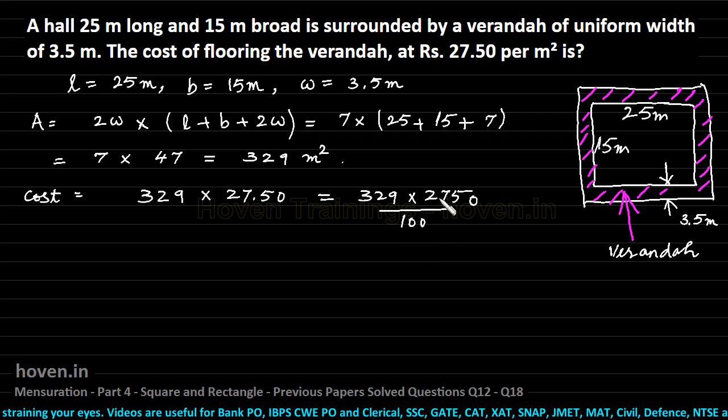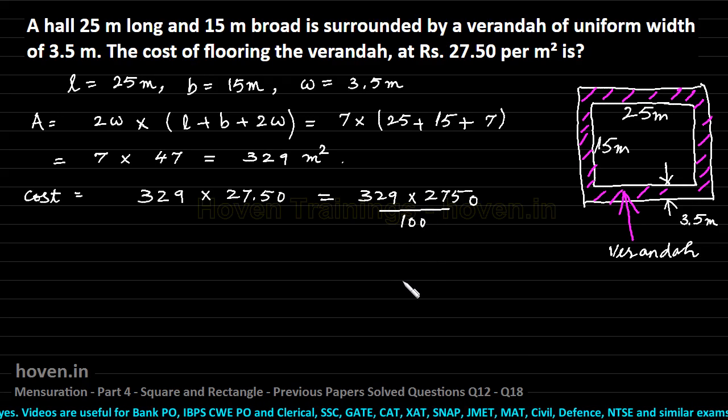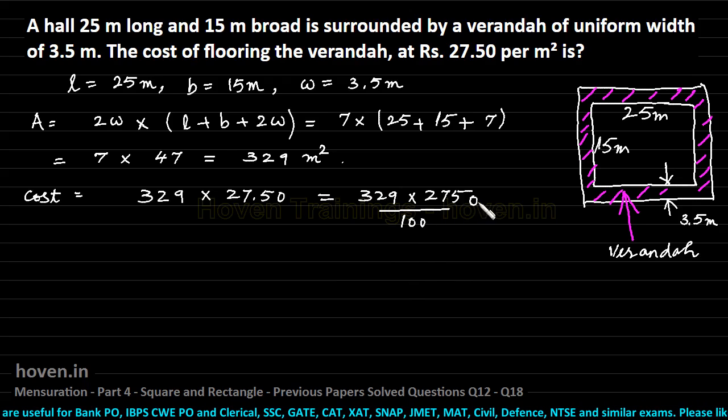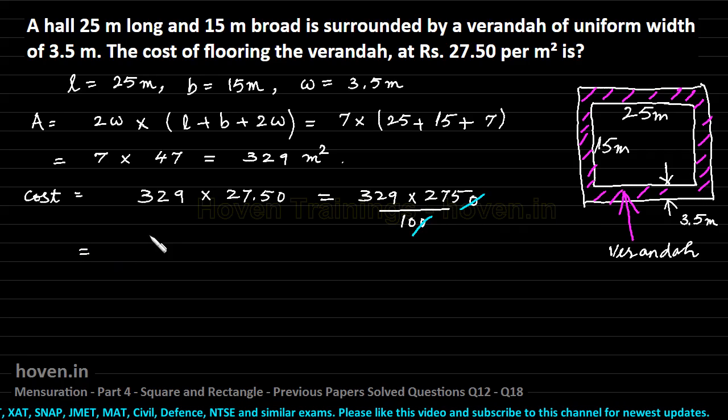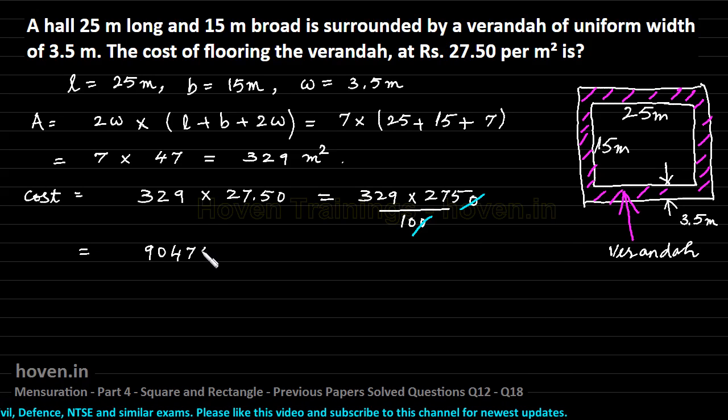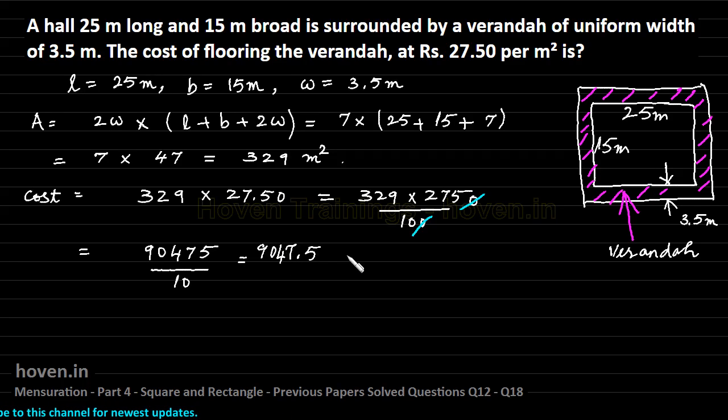Now, in this case we simply need to multiply these two figures and obtain our answer. We can first of all cancel this zero by this one. Now it remains about multiplication of 329 and 275, which you can calculate on your sidelines to see that 90475 is the numerator and the 10 here brings the answer to 9047.5.